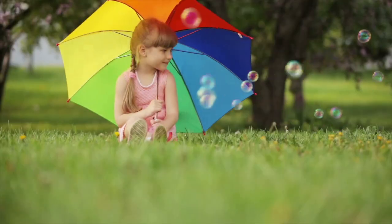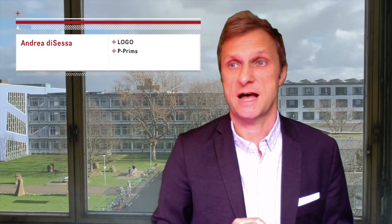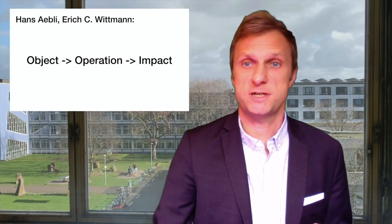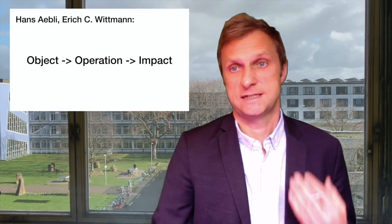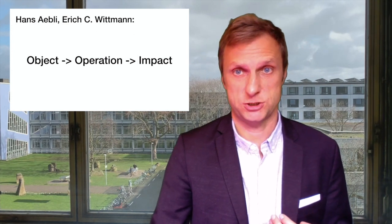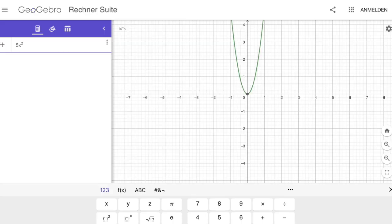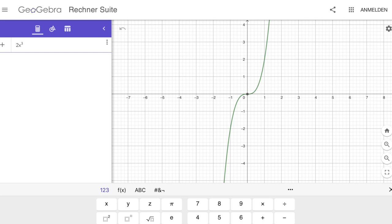In physics education, Seymour Papert's student Andrea Di Sessa argued that phenomenological primitives — so-called p-prims — are the building blocks that learners use to construct their knowledge. Therefore, he changed the way we look at what we used to call misconceptions. In Germany, it was Erich Wittmann who adopted Piaget's theory for mathematics education. He uses an approach of having students identify mathematical objects, let them operate on these objects, and assess the impact of different operations.